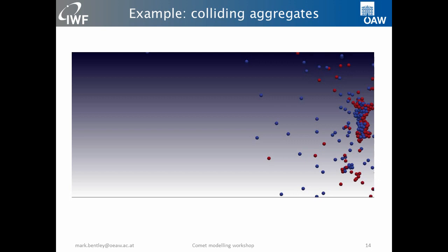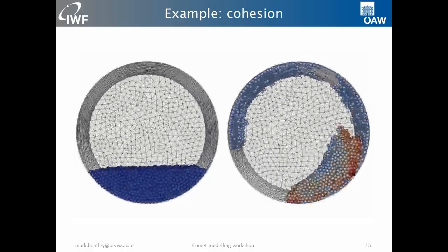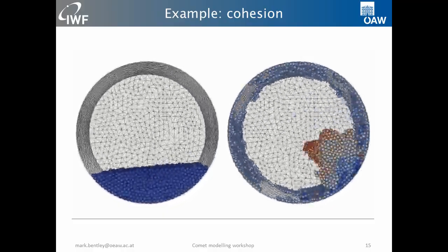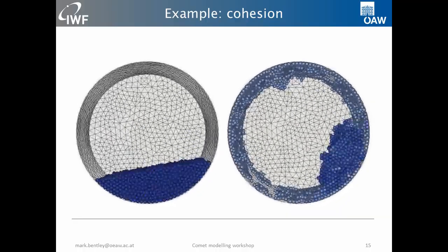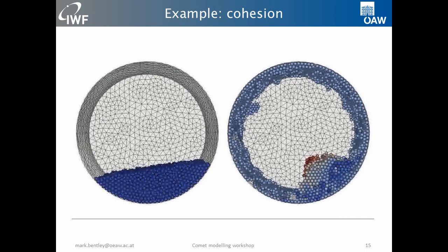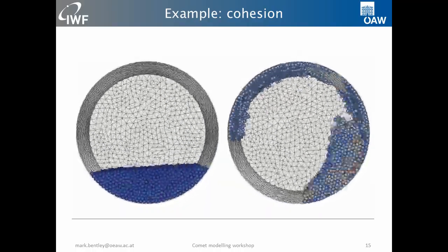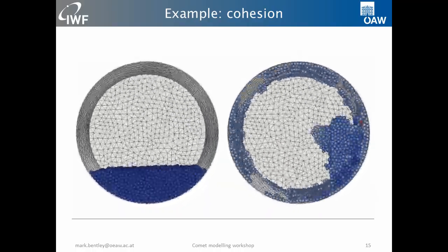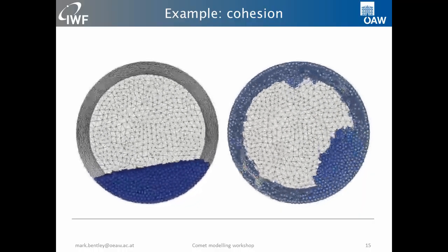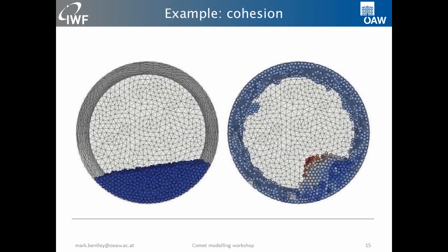Cohesion is a critical factor. You need to add this in your models, and this is just a simple example to show that this works — that you can indeed include cohesion, and if you do this, you see that particles clump together very well. This is a super cohesion compared to what you might expect, and the reason I did this particular geometry is that there are experiments done on parabolic flights with these rotating drums under different gravity conditions, so you can try to validate the model.